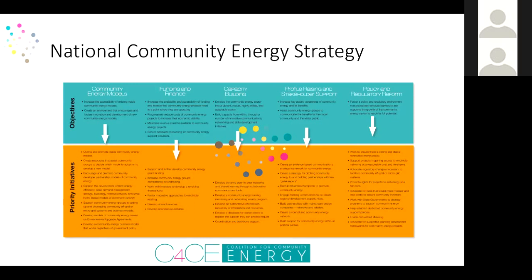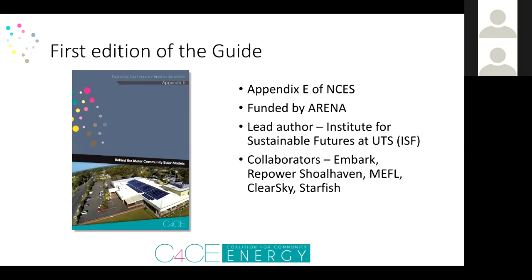As part of the National Strategy, there were a number of additional documents and resources developed, and the first edition of this Small Scale Community Solar Guide is one such resource — it was Appendix E. It was led by ISF with collaborators including Embark, Repower Shoalhaven, Moreland Energy Foundation, Clear Skies and Starfish Initiatives. It came out of a workshop with community energy groups that had successfully or almost successfully gotten their first community solar project across the line. This was back at the end of 2014 — we'd only really seen less than 10 projects get up.